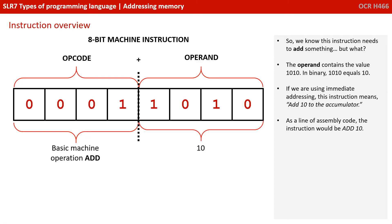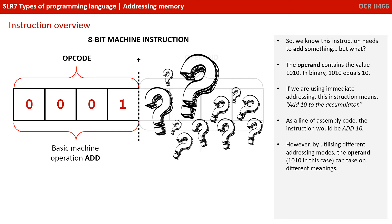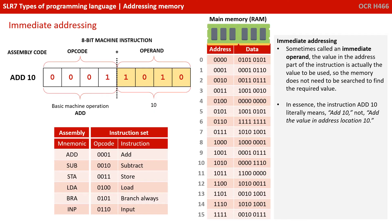So, if we're using immediate addressing, the instruction means add 10 to the accumulator. As a line of assembly code, the instruction would be ADD 10. We've just shown the example of immediate addressing — this is sometimes called an immediate operand. The value in the address part of the instruction is actually the value to be used, so memory doesn't actually have to be searched to find the required value. In essence, the instruction ADD 10 literally means add 10, not add the value in address location 10. That 10 would actually be represented in binary as 1010.